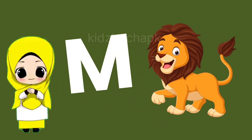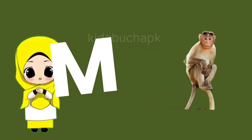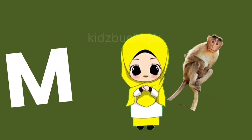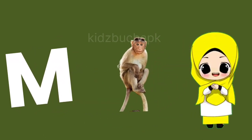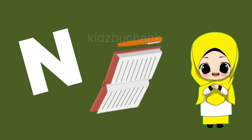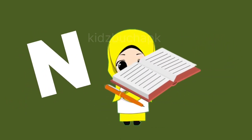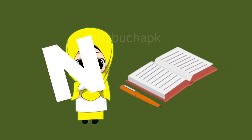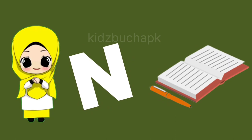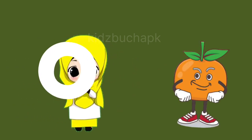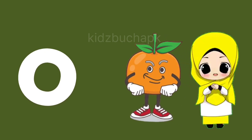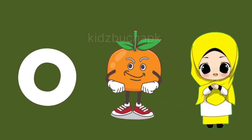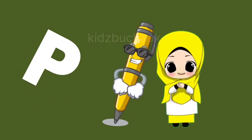M for monkey, monkey means bandar. N for notebook, notebook means copy. O for orange, orange means sangtra. P for pen, pen means column.